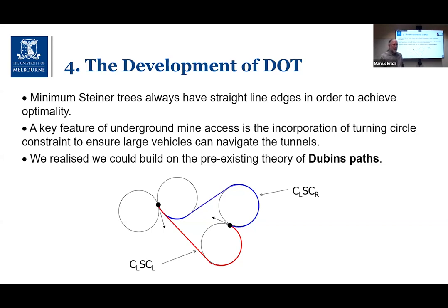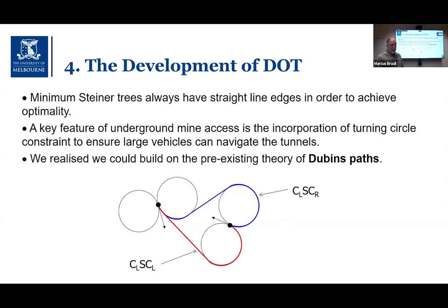Dubins path theory, established in the 1960s, looks at finding minimum-length curvature-constrained paths between points with a given direction at each endpoint. Dubins theory showed that minimum paths can always be constructed from arcs of circles with a minimum turning radius that the vehicle can navigate, plus straight-line pieces — so paths composed of these in smooth combinations, as shown in the two examples here.